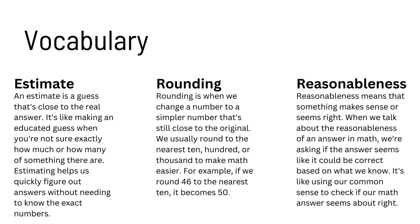Rounding. Rounding is when we change a number to a simpler number that is still close to the original. We usually round to the nearest ten, hundred, or thousand to make math easier. For example, if we round forty-six to the nearest ten, it becomes fifty.